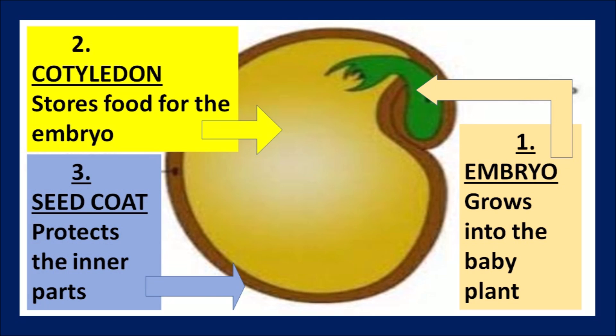Let us understand the different parts of a seed through this diagram. There are three main parts of a seed. The first and most important is the embryo. We have learnt that the seed has the ability to grow into a new plant, and it is this embryo which has the ability to give birth to a new plant — that is why we also call it the baby plant. Then we have the cotyledons. For the growth of the embryo, food is stored in the seed itself in the form of cotyledons. The seed coat is a protective covering that protects the cotyledon and the embryo inside the seed.